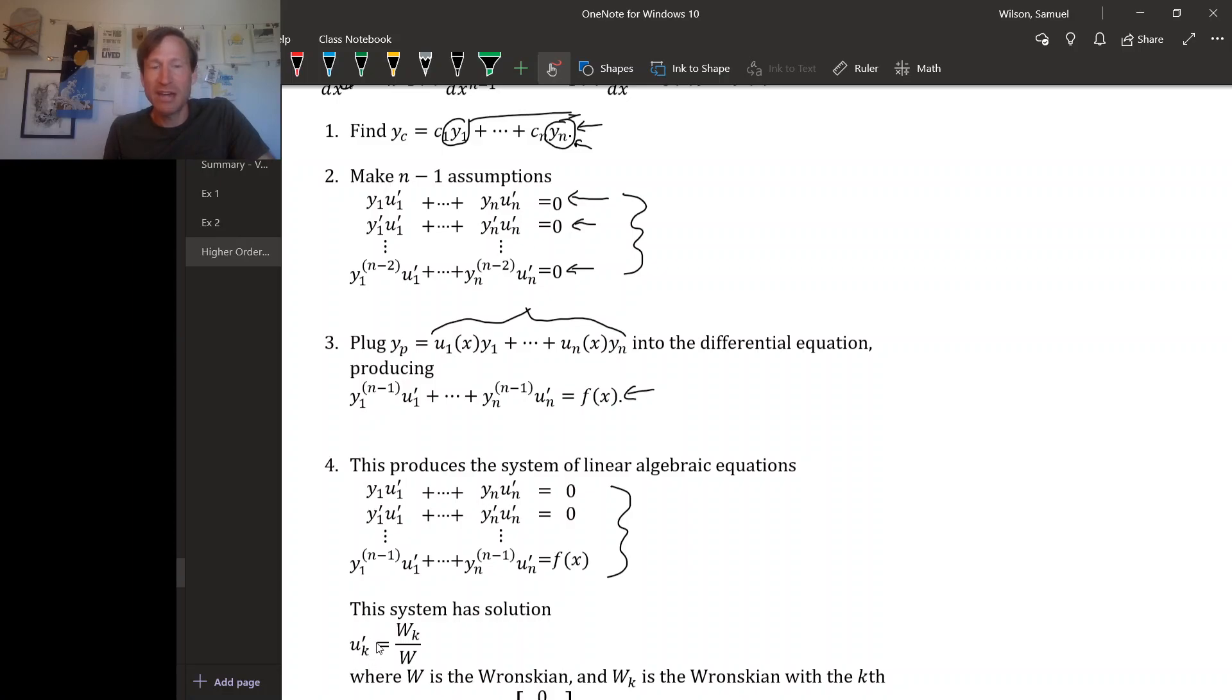u sub k prime, so K could be anything from 1 up to n here, turns out to be a ratio of two determinants. The denominator is just the Wronskian, right? So this Wronskian is just the determinant of y sub 1 up to y sub n. And then each row has different orders of derivatives down to the n minus first derivative. So that's what the Wronskian is.